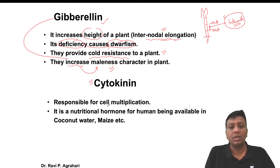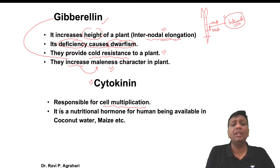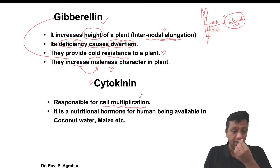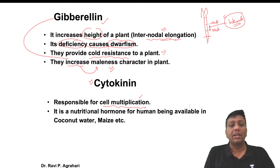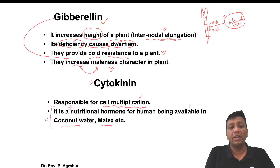The next hormone is cytokinin. Cytokinin is responsible for cell multiplication, meaning the rapid and fastest growth of cells - massive growth in the plant because of cytokinin. Cytokinin is very nutritive, and in the case of coconut water, if you take cytokinin it is good for your health.